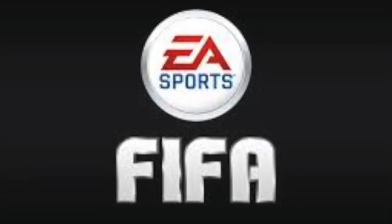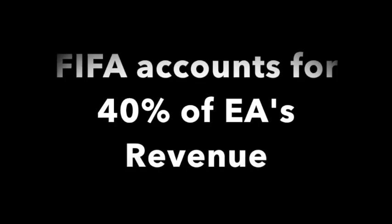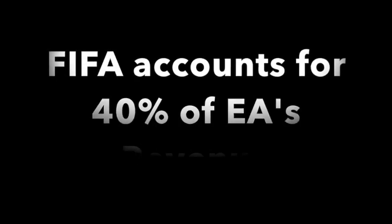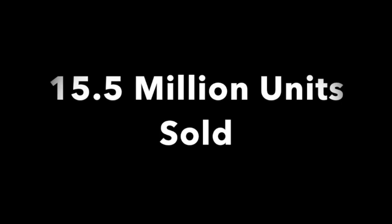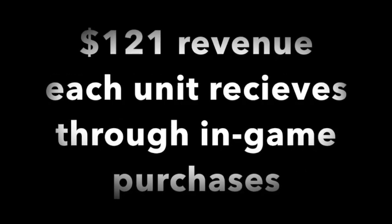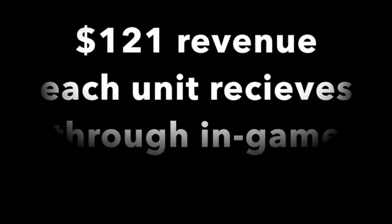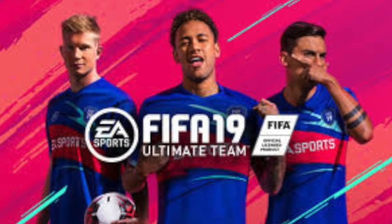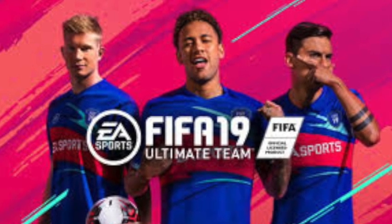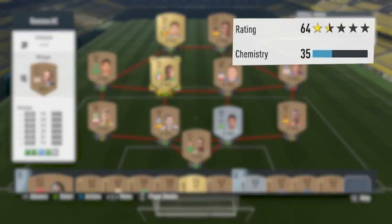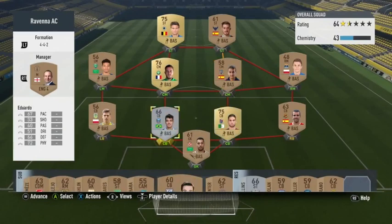According to Forbes magazine in 2016, the FIFA franchise accounted for nearly 40% of Electronic Arts' revenue. The company sold close to 15.5 million units of FIFA, with each unit earning nearly $121. This figure comes not only from initial game sales, but also from services such as in-game purchases and the Ultimate Team feature. The game mode that utilizes the pay to win model is called FIFA Ultimate Team.